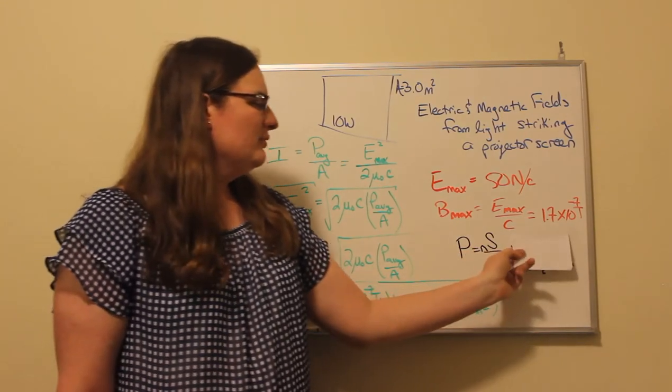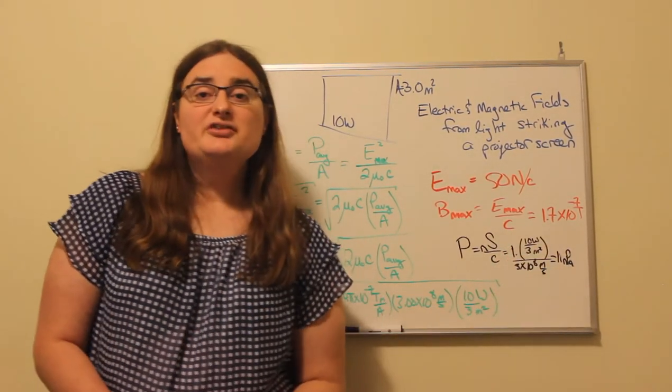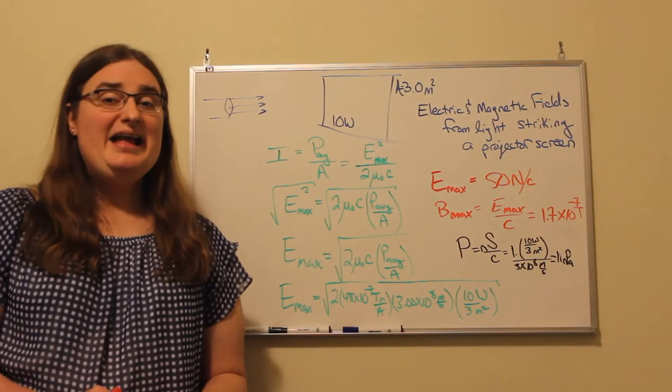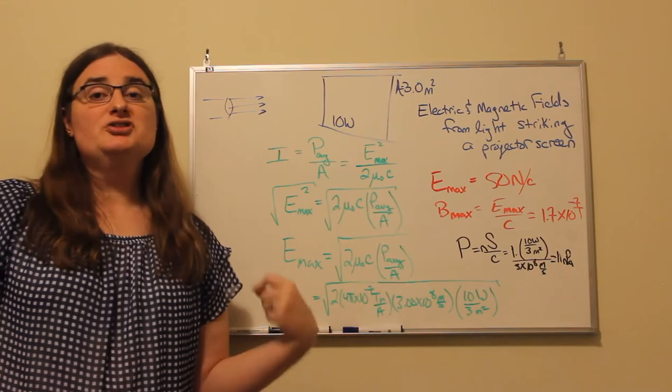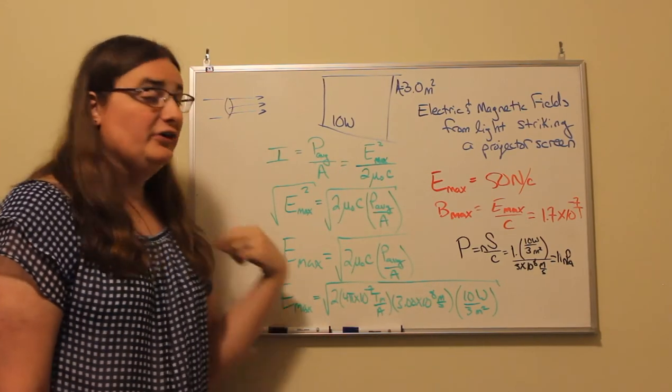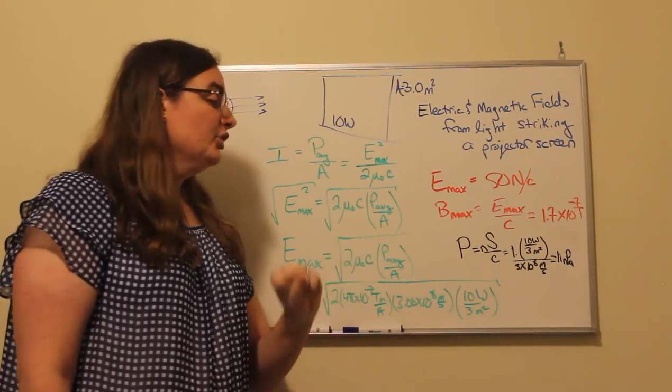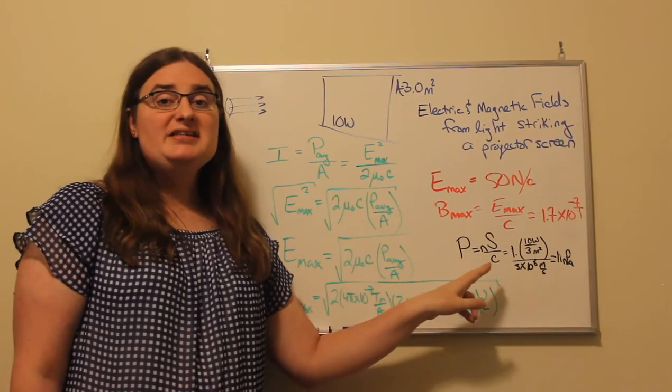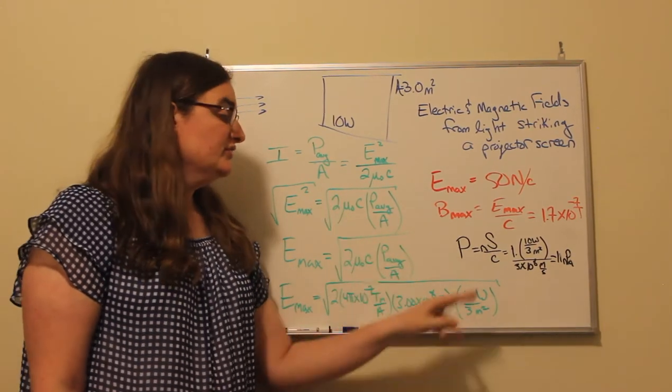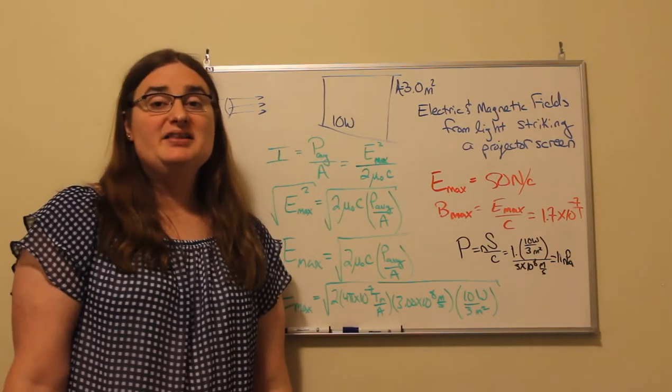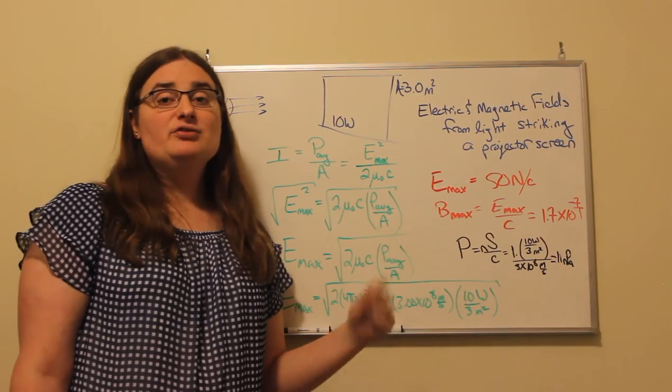Now for a little bonus. Anytime light is striking a surface, there's a transfer of momentum and there is a pressure from that force being spread all over that surface area. And the pressure is found for complete absorption by taking the Poynting vector, the average intensity of light striking the surface of an object and dividing by the speed of light. For perfect reflection, it would be a factor of two times that.